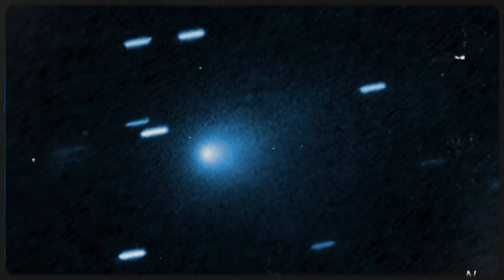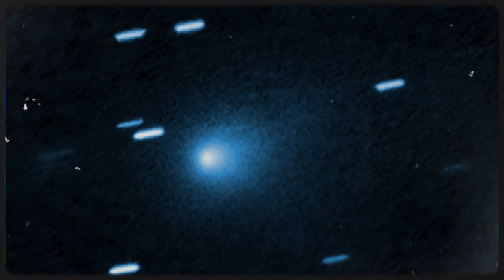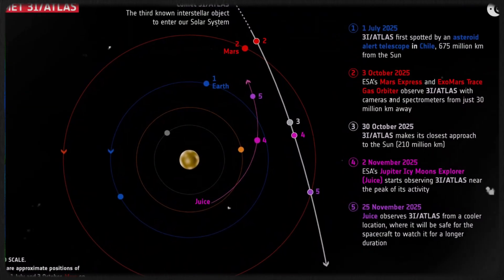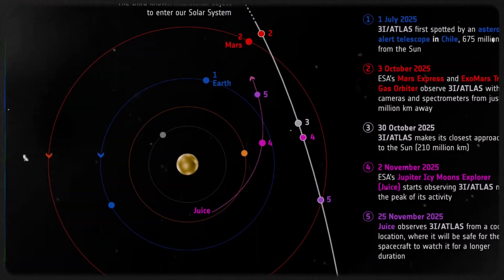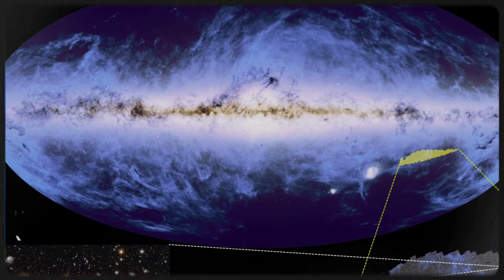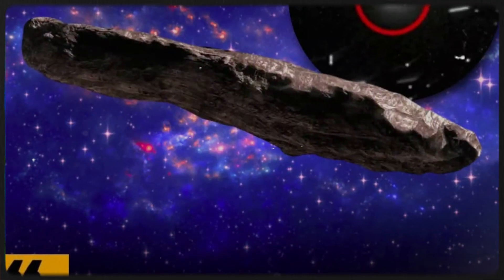Data began to accumulate, feeding into the hands and minds of researchers who sensed something extraordinary. As optical measurements poured in from 227 observatories around the globe, over 4,000 distinct astrometric readings collected between May and September...